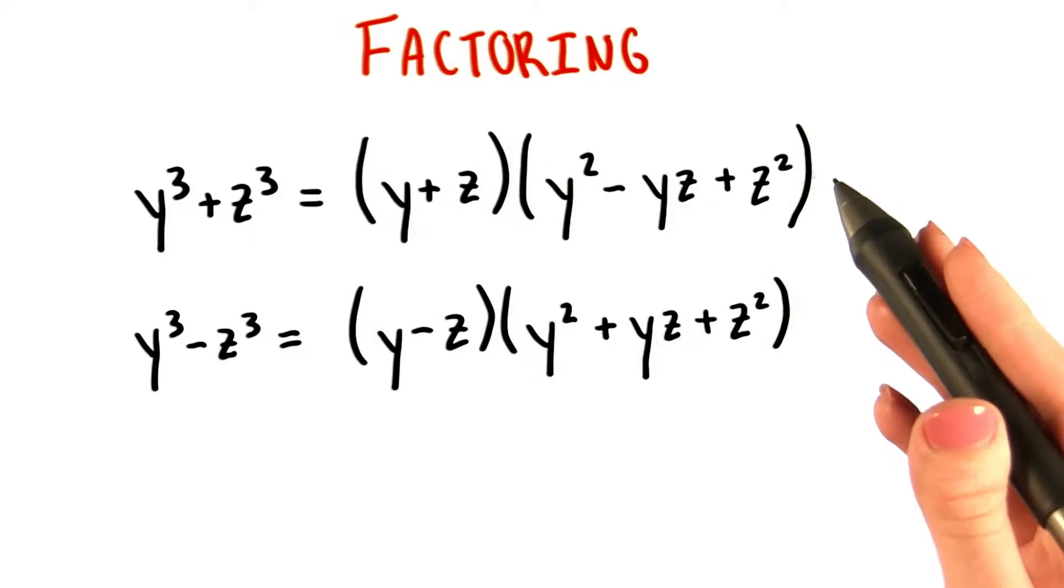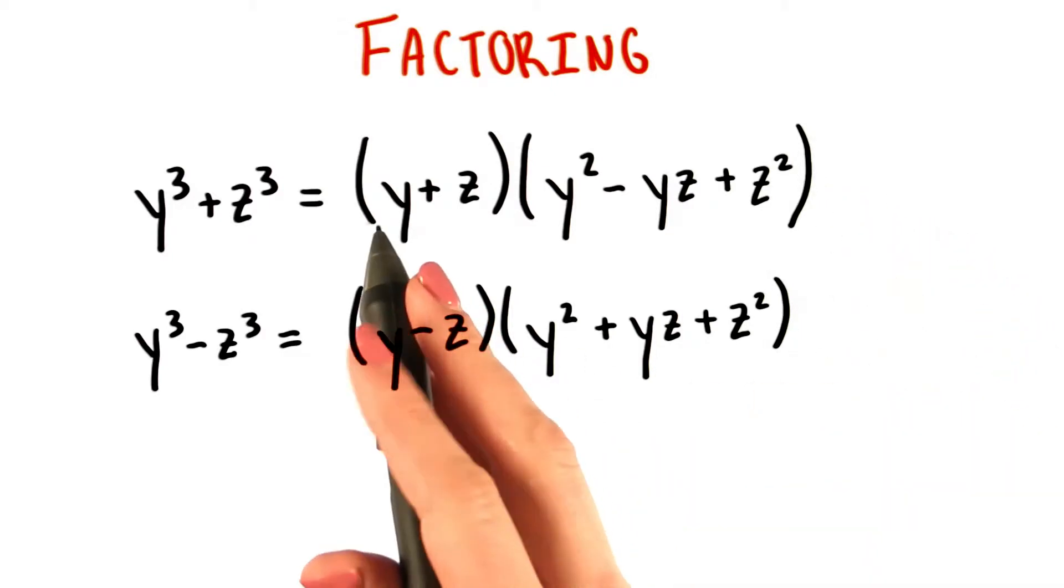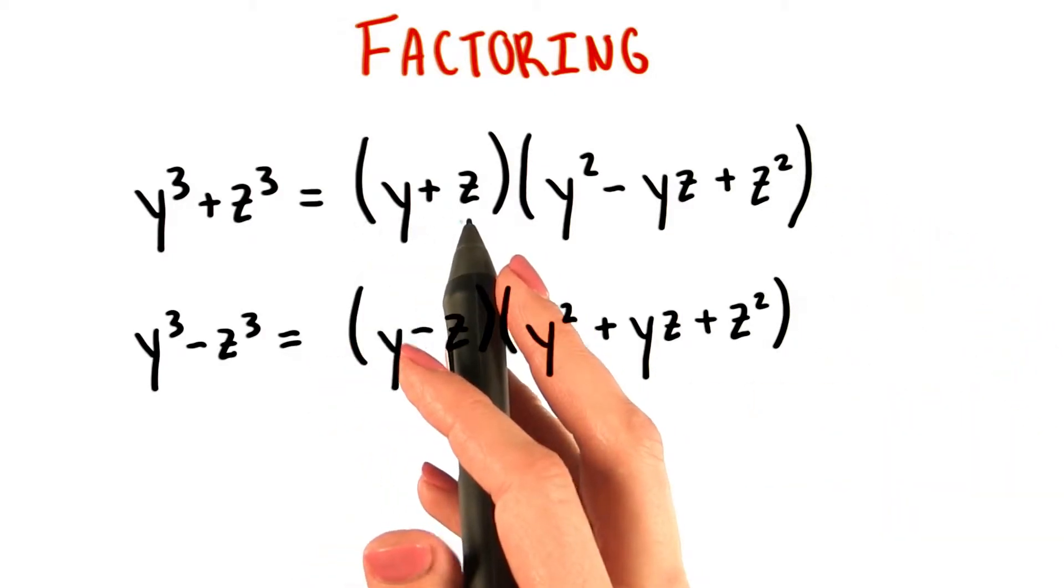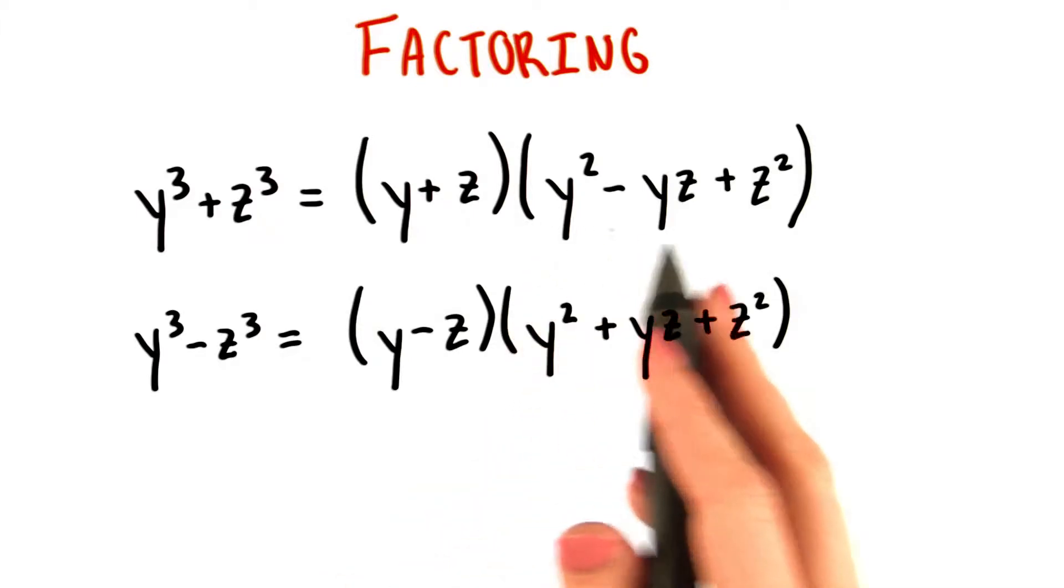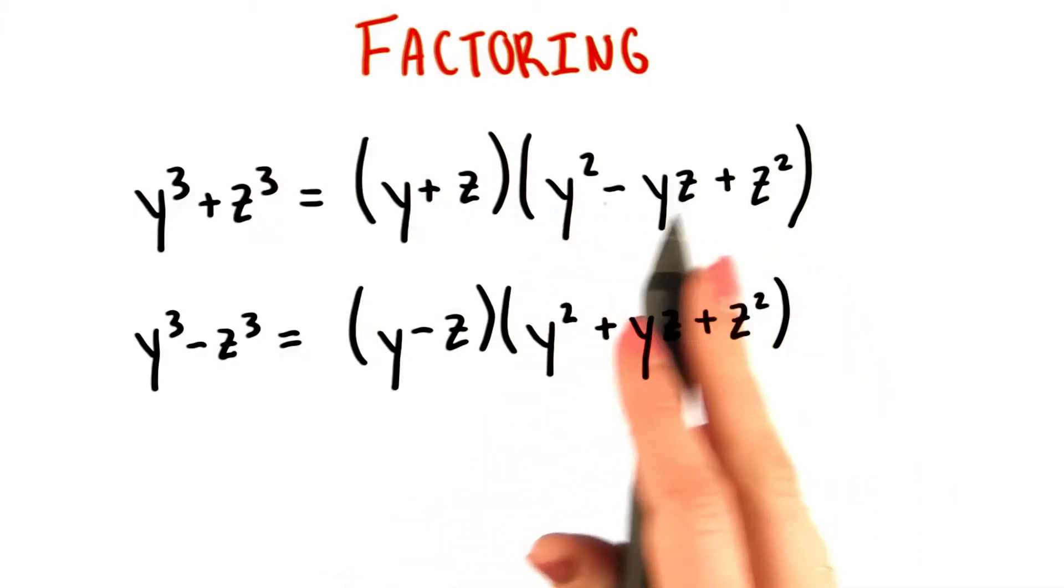We can see here that each of these factorized forms has a binomial, a polynomial of two terms, multiplied by a trinomial, a polynomial with three terms.